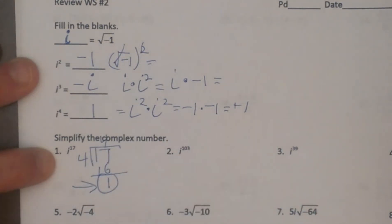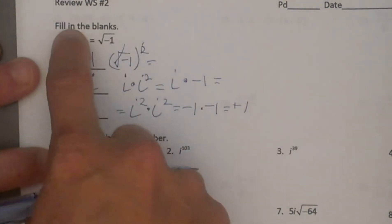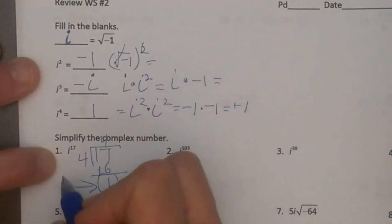Now this is really all we care about, the remainder. We say I would count through the pattern four times, but my remainder is one, so it has to be the first one in the pattern. So the answer to i to the seventeenth is just i.